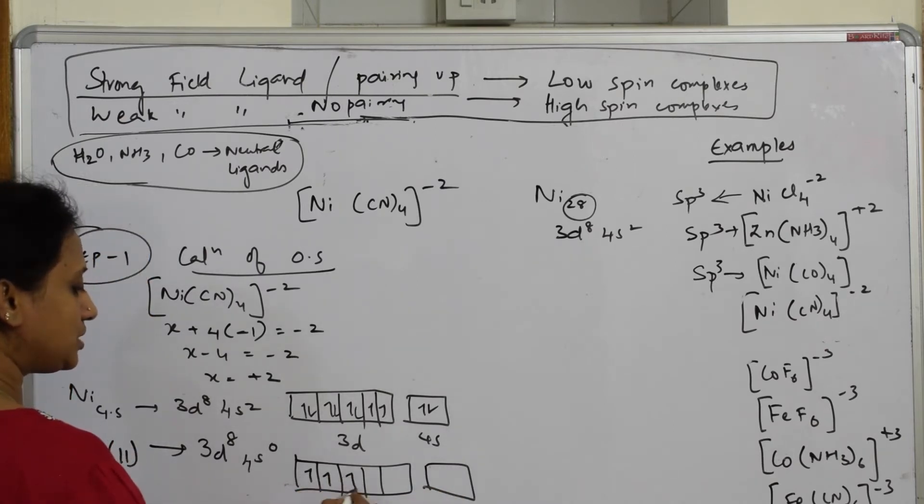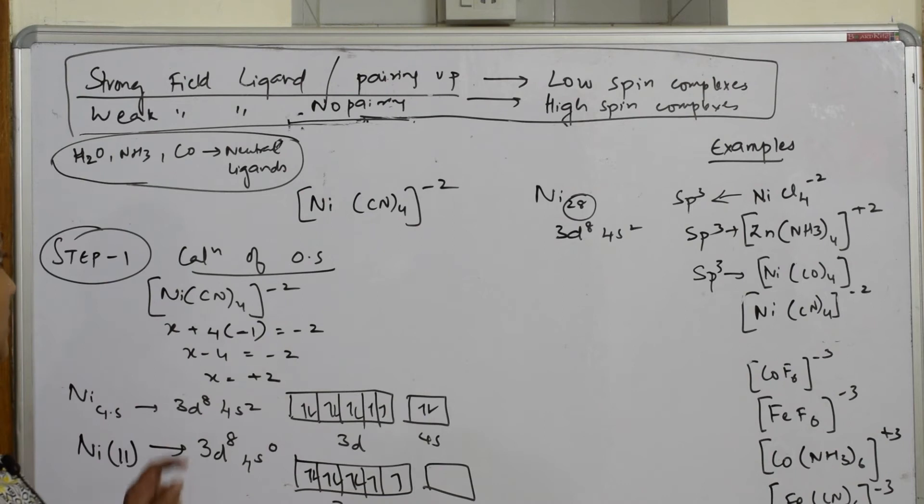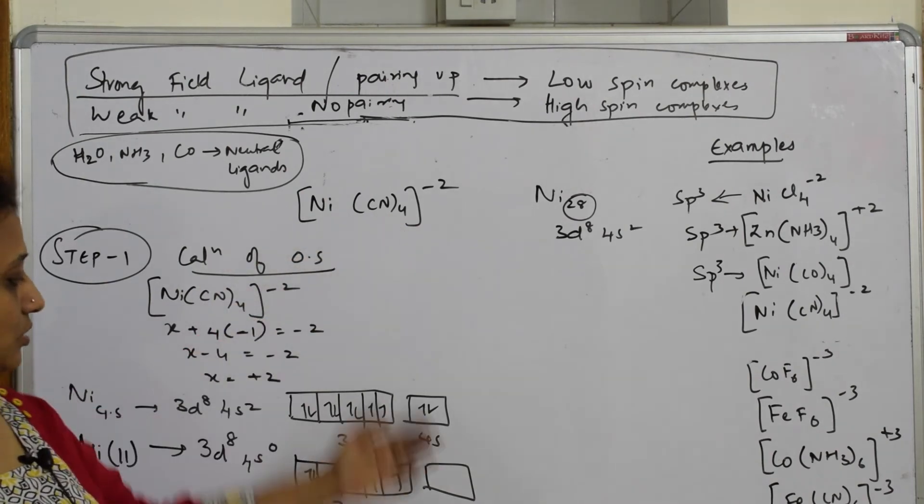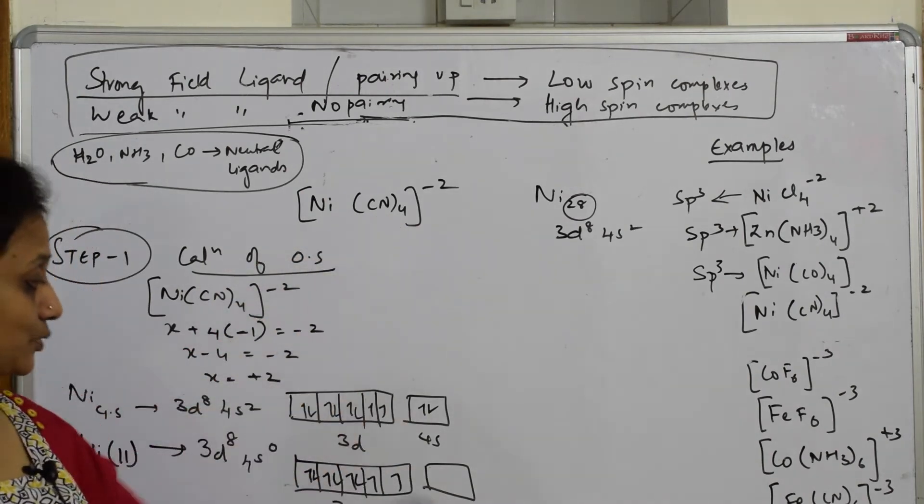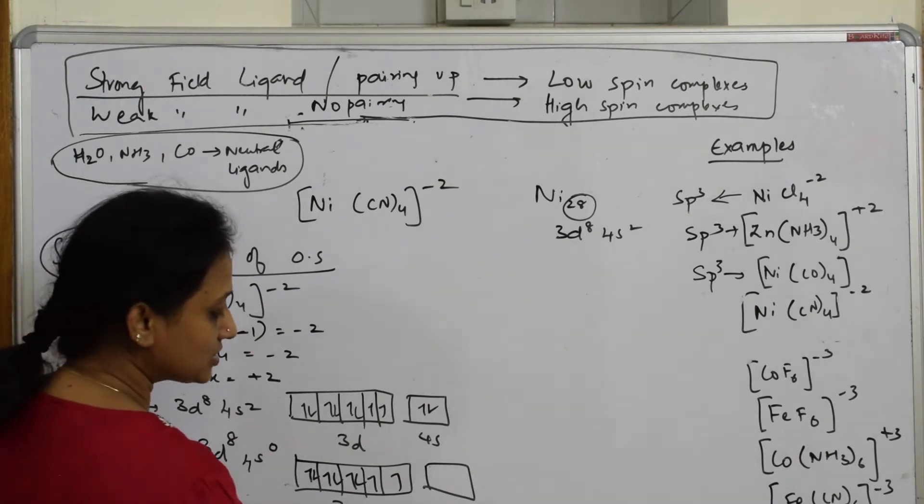So the configuration is 1, 2, 3, 4, 5, 6 because 8, 7, 8. Now careful, your ligand, now the orbitals are empty. The ligand starts approaching the metal orbital d orbital.